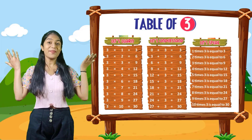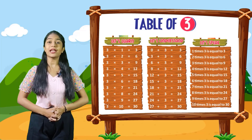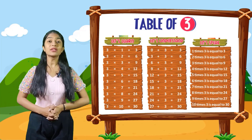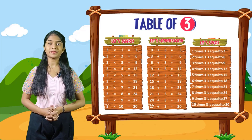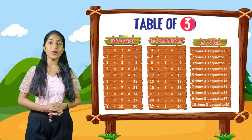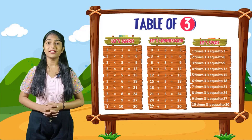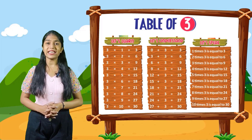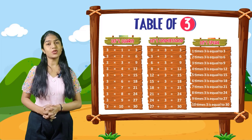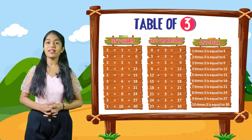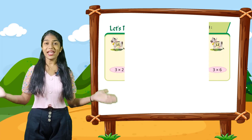So kids, now let's speak. You have to speak out with me. 1 times 3 is equal to 3. 2 times 3 is equal to 6. 3 times 3 is equal to 9. 4 times 3 is equal to 12. 5 times 3 is equal to 15. 6 times 3 is equal to 18. 7 times 3 is equal to 21. 8 times 3 is equal to 24. 9 times 3 is equal to 27. 10 times 3 is equal to 30.